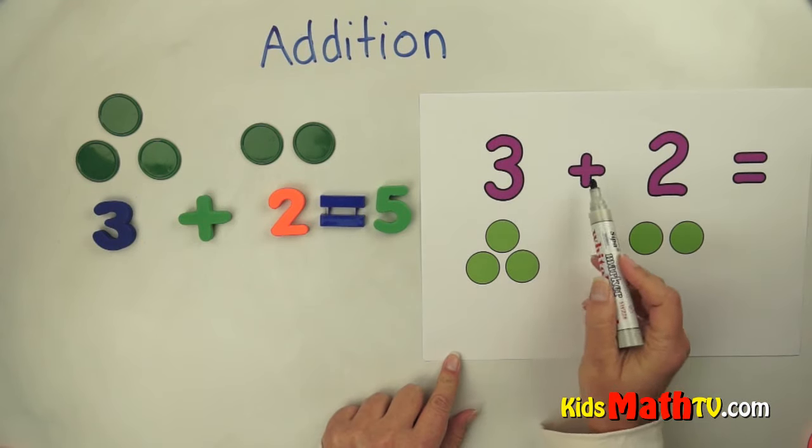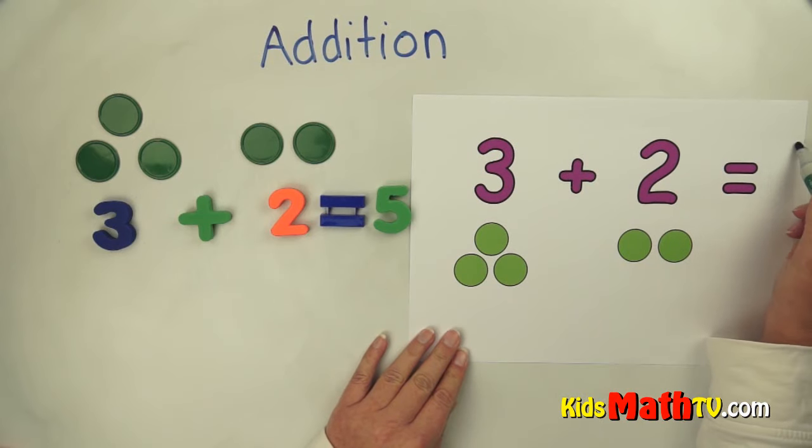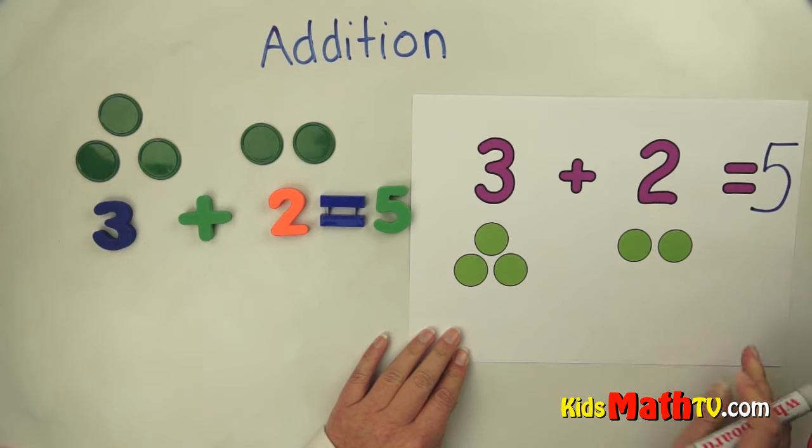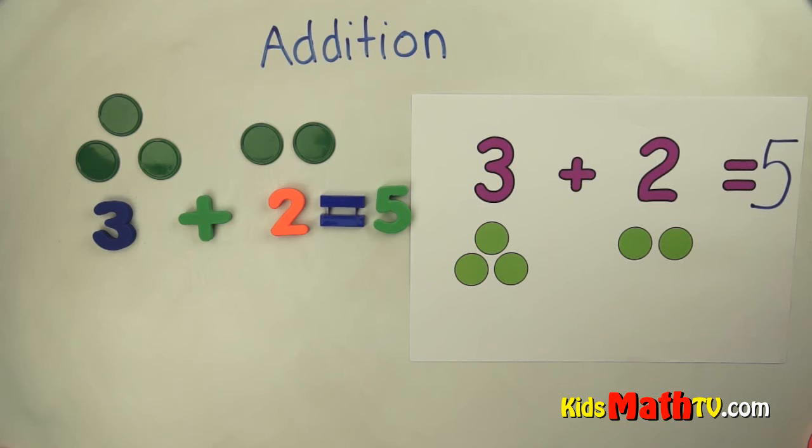So the answer to three plus two is five. And that's the end of our lesson on addition.